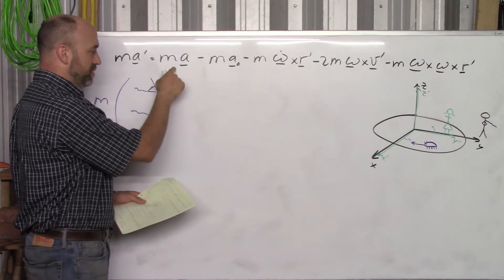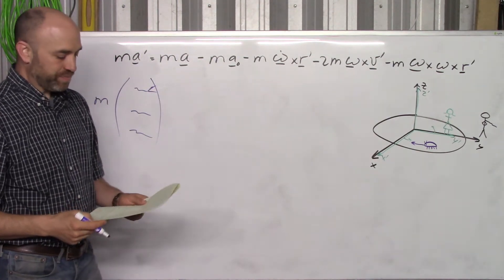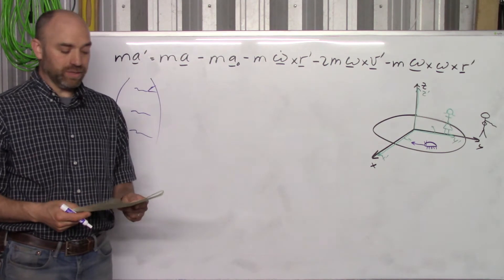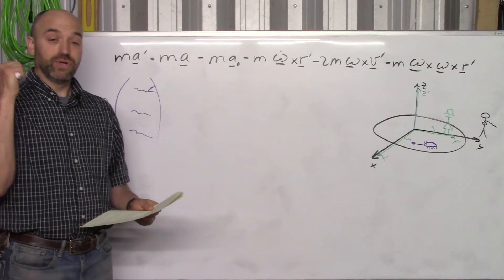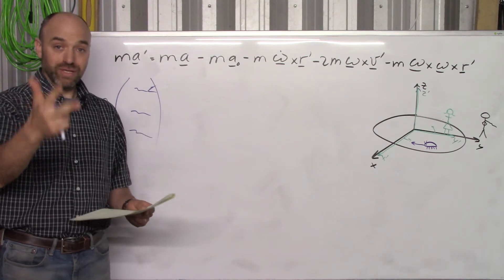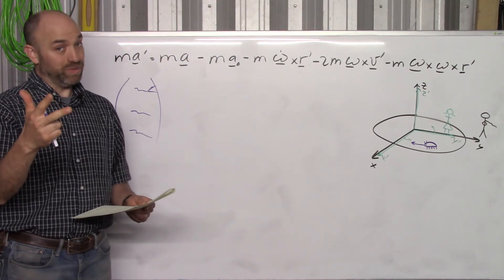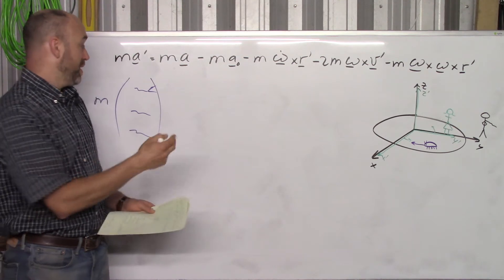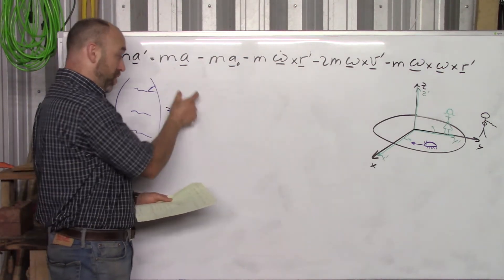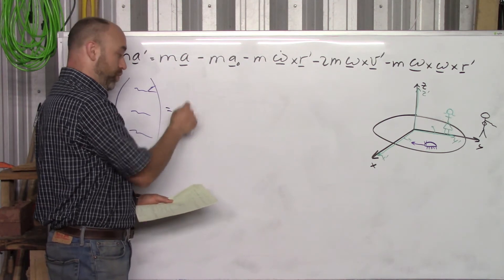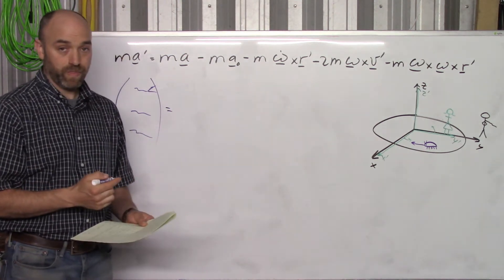And then on this side there's going to be real forces on the ladybug. What forces are on the ladybug? Normal force, friction, gravity. Better give those the right directions and put those in terms of cylindrical coordinates on the ladybug right here: rho, phi, z.